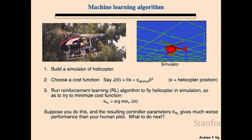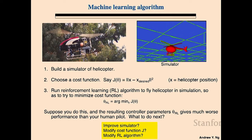Let's say you do this and the resulting controller gives much worse performance than your human pilot — the helicopter wobbles all over the place and doesn't stay where you hoped. What do you do next? Here are options corresponding to the three steps: you could work on improving your simulator — air flow around helicopters is very complicated and even aerodynamics experts can't fully explain some details. There's almost unlimited headroom for building better helicopter simulators. Or maybe the cost function is messed up — maybe squared error isn't the best metric. Or maybe you want to modify the reinforcement learning algorithm because you suspect it's not doing a great job of minimizing the cost function.